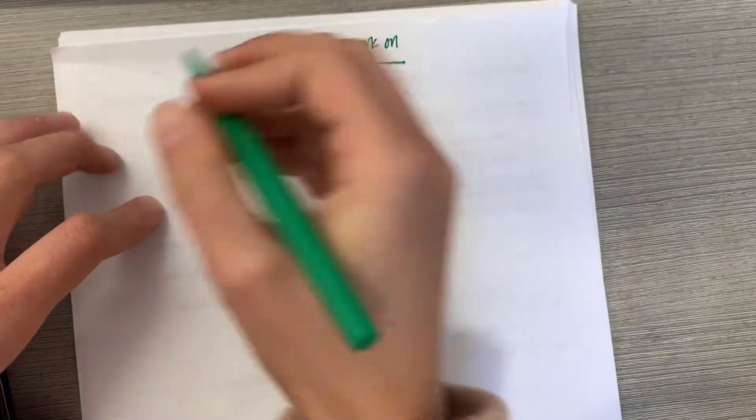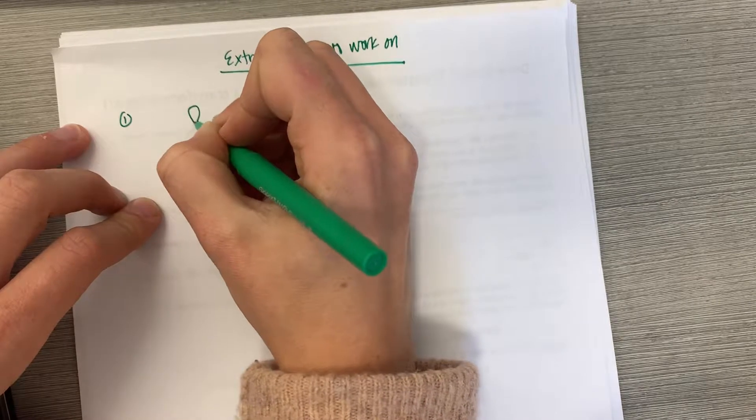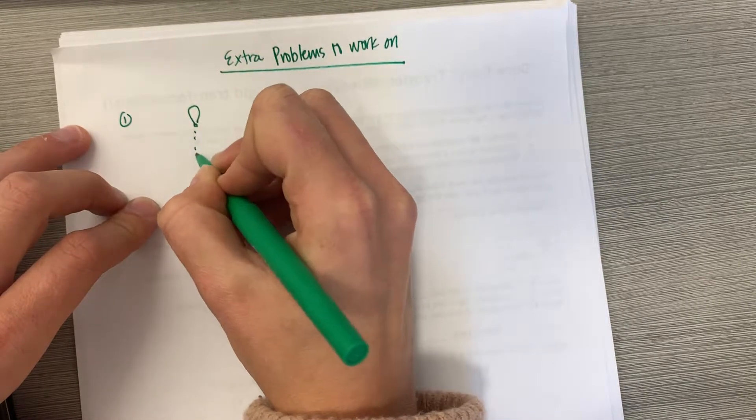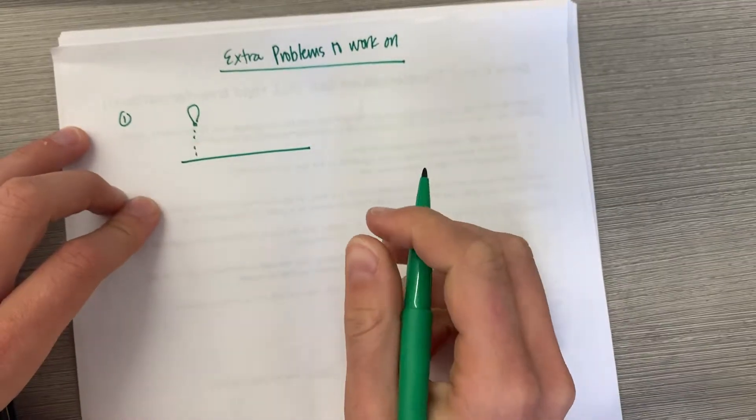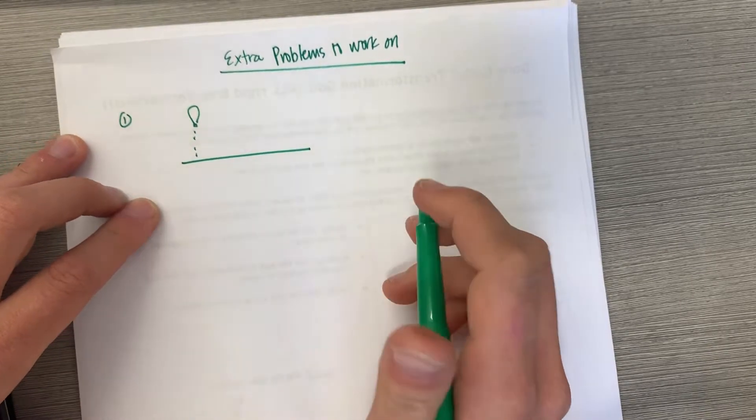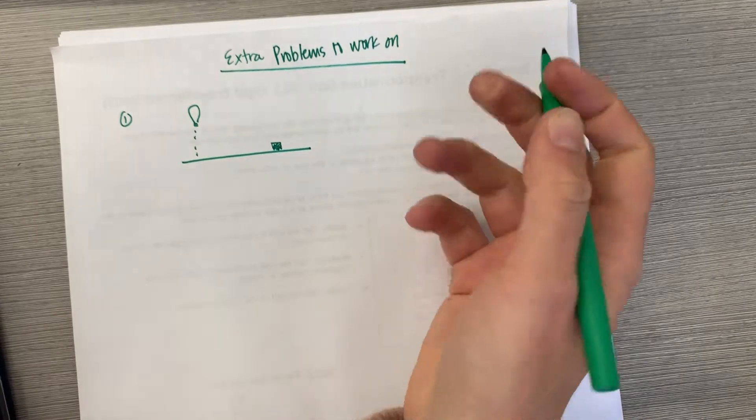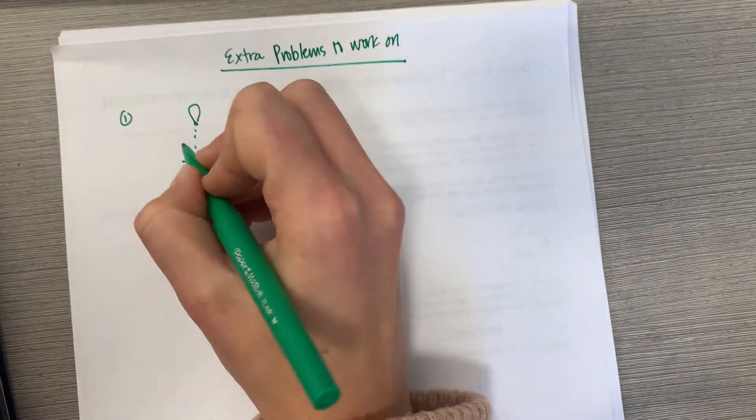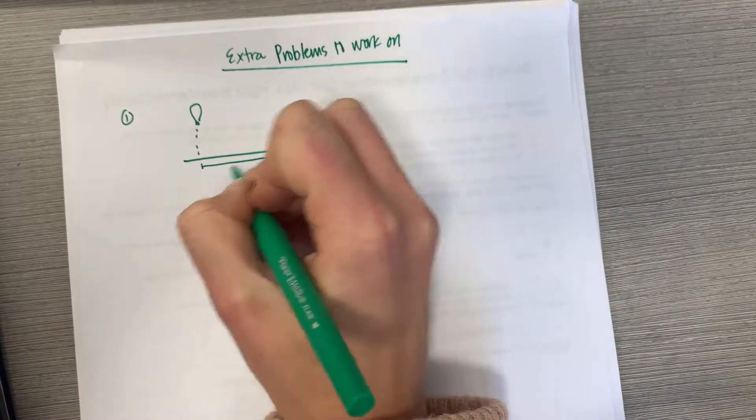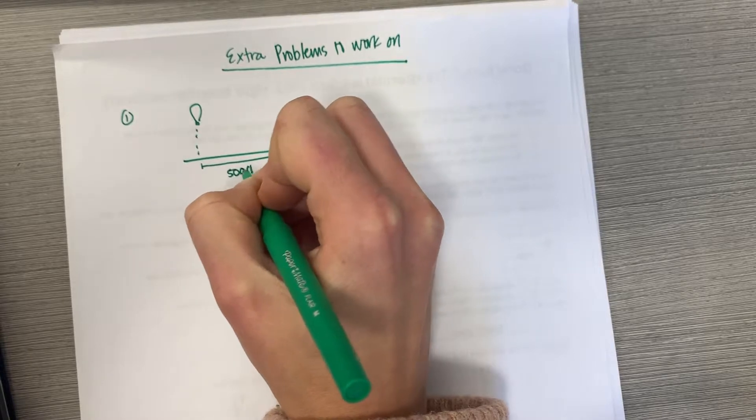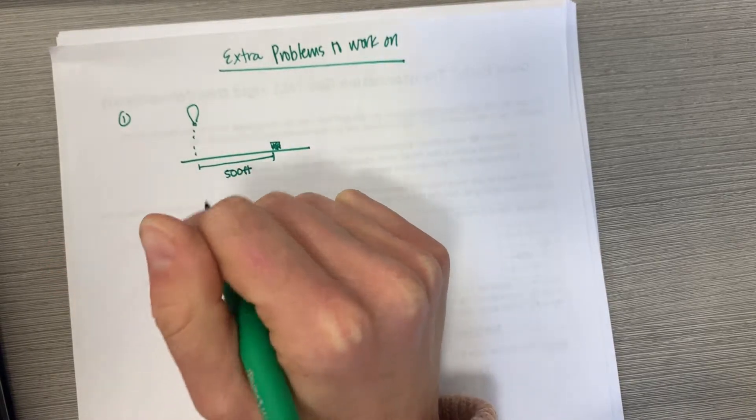The first problem is about a hot air balloon rising straight up from a level field. It's tracked by a rangefinder, I don't know what a rangefinder is but it's on the ground and the rangefinder is 500 feet from the liftoff point of the hot air balloon.